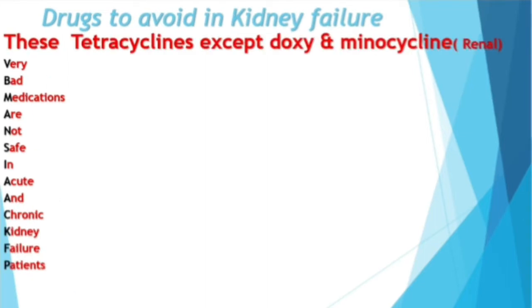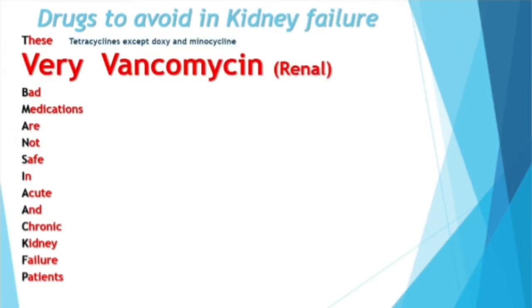'T' stands for tetracyclines — except for doxycycline and minocycline, which can be given to patients with kidney failure, whether acute or chronic. The other tetracyclines lead to renal injury. 'V' is for vancomycin, which can also lead to renal injury, so it is better to avoid it in kidney failure patients or dose it renally according to the GFR.